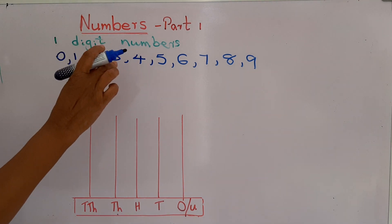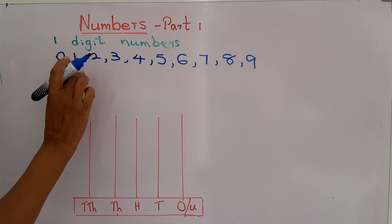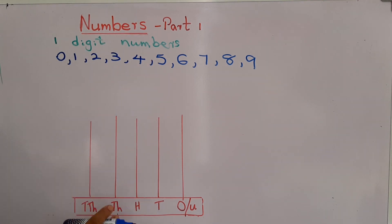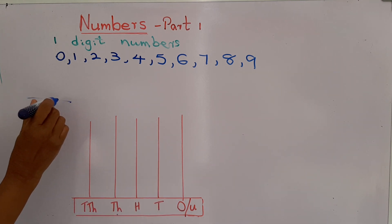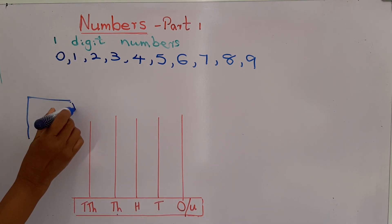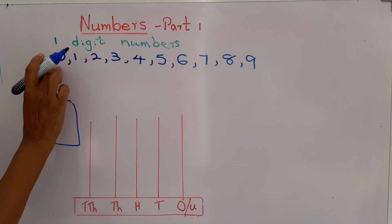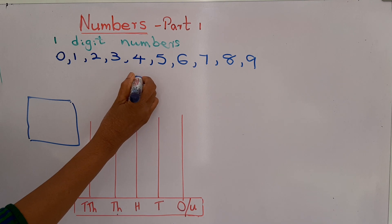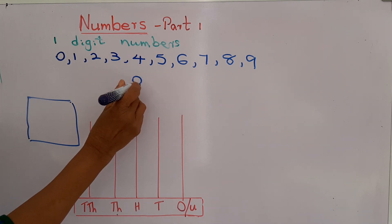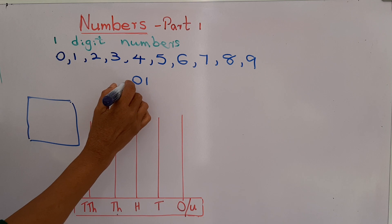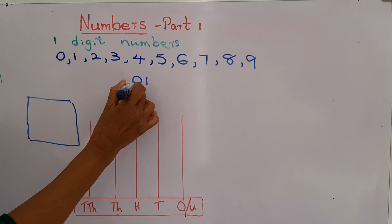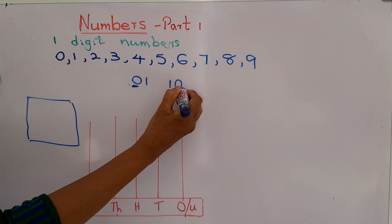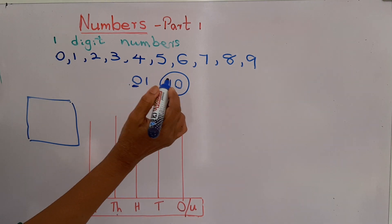Why do we call these one-digit numbers? Because there is only one place. I will explain. Here, can you see an abacus on the board? I will take the first number, 0. When we put 0 in front of a number, it doesn't give a value to the number. If we put 0 after the number, it adds value to the number.